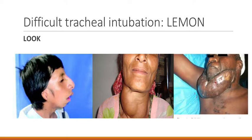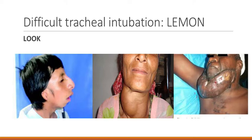Before we intubate a patient, we should assess the airway to see if it is going to be easy or hard to intubate. Here is the mnemonic LEMON to remember what things to look for before intubating a patient to identify a difficult airway. If a difficult airway is anticipated, we should call a person with experience. It is optimal to always have two providers when intubating, and one must be experienced, but this is even more important when we expect a difficult airway.